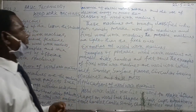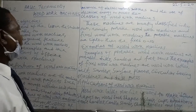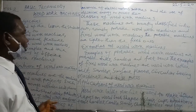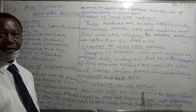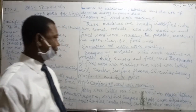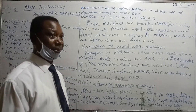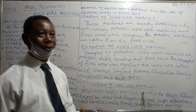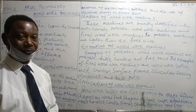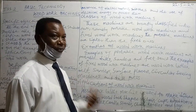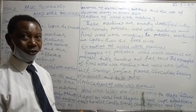We move to the classes of woodwork machines. The machines are broadly classified into two: first, it's called the portable woodwork machines, and the second one is referred to as fixed woodwork machines.